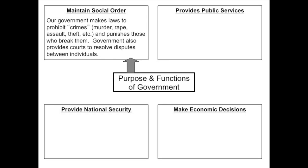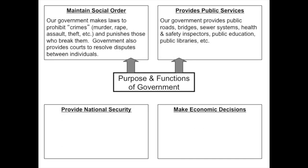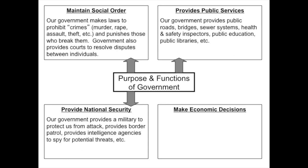Maintaining social order is the idea that if someone breaks a law, they need to be held accountable. So making laws and then enforcing them is maintaining social order. When the government provides public services, we are looking for the government to provide things like roads, bridges, school systems, public libraries or parks — public services everyone can use.